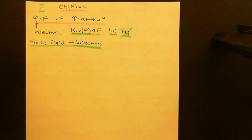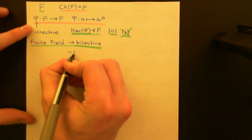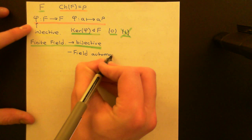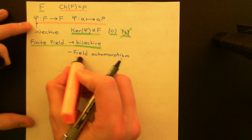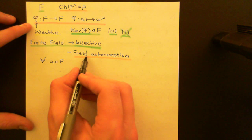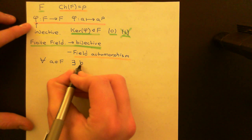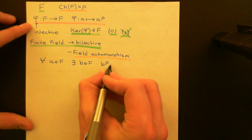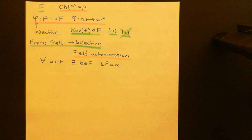So the Frobenius map on a finite field of characteristic P is a bijective map — you could call it a field automorphism. The Frobenius endomorphism becomes the Frobenius automorphism when working with a finite field. What this means is that for any element A of the finite field, you can find its preimage under the Frobenius automorphism: there exists some element B in the field such that B to the power of P equals A. This will be an important fact in upcoming videos in this playlist on ring theory.